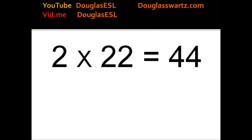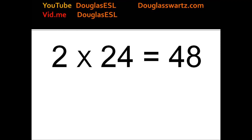2 times 22 equals 44. 2 times 23 equals 46. 2 times 24 equals 48. 2 times 25 equals 50.